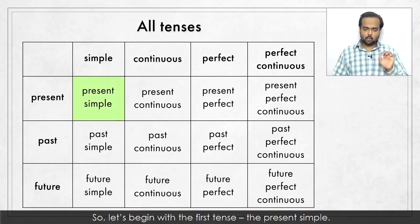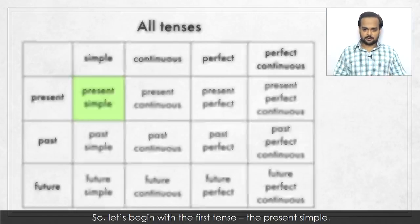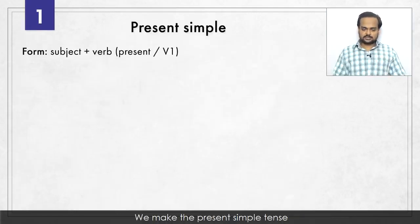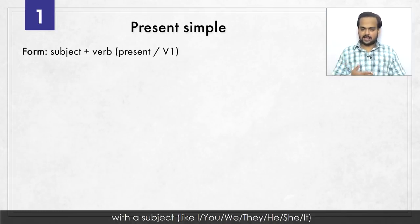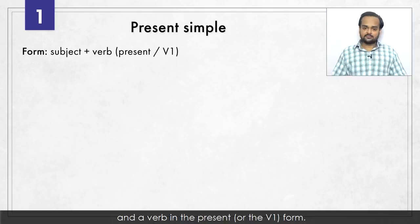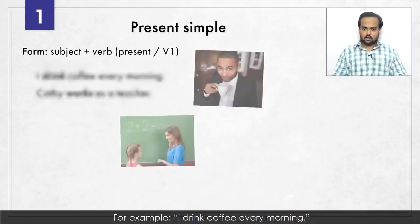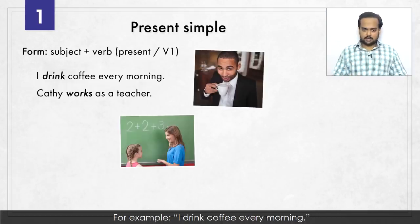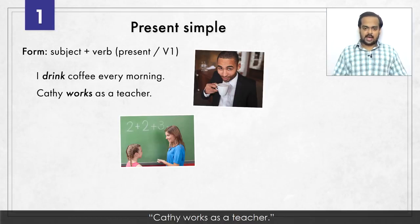So let's begin with the first tense, the present simple. We make the present simple tense with a subject like I, you, we, they, he, she, or it, and a verb in the present or the V1 form. For example: I drink coffee every morning. Kathy works as a teacher.